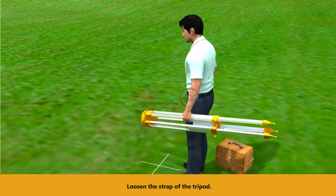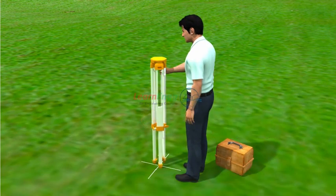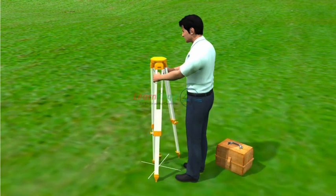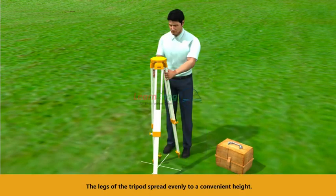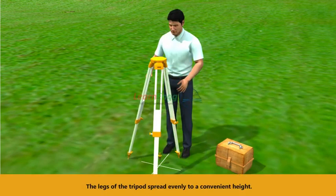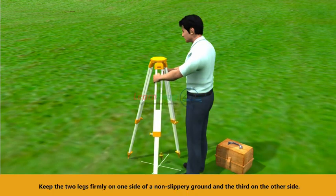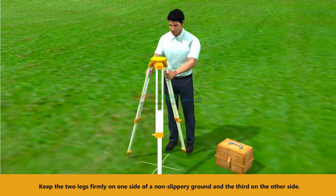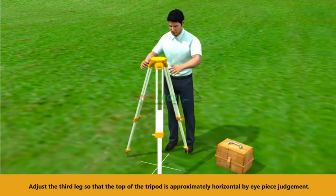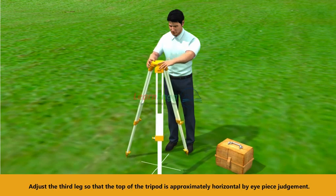Loosen the strap of the tripod. The legs of the tripod spread evenly to a convenient height. Keep the two legs firmly on one side of a non-slippery ground and the third on the other side. Adjust the third leg so that the top of the tripod is approximately horizontal by eyepiece judgment.